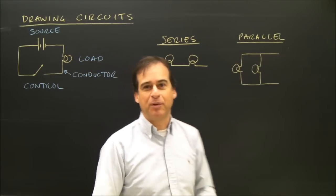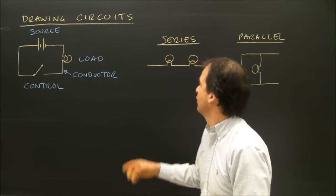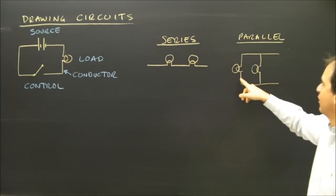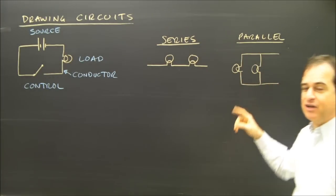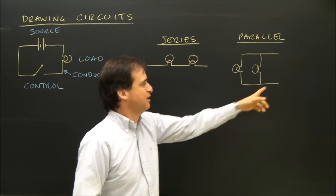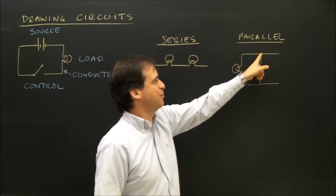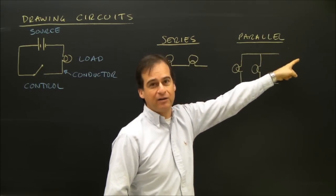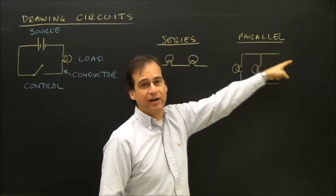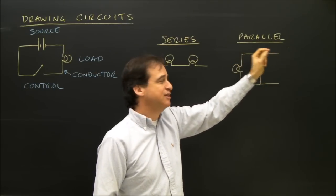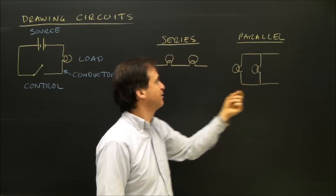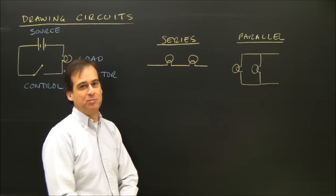There's also something called parallel. Parallel is when you have one beside the other. I've got one bulb beside the other. The electricity has two paths that can flow — it can go through here, through that bulb, and back out to the source; or through the other bulb and back out to the source. So electricity has two paths here, or more than one path. The electricity in series only has one path.